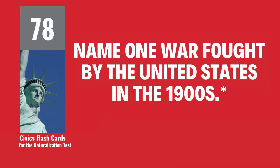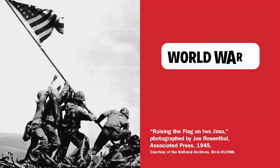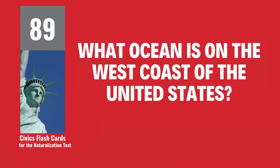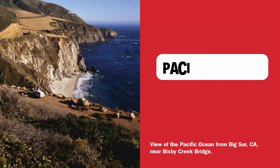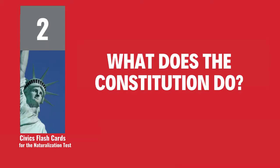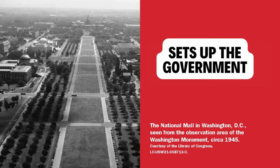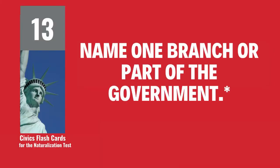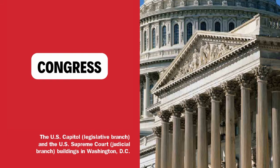Name one war fought by the United States in the 1900s. World War I. What ocean is on the west coast of the United States? Pacific Ocean. What does the Constitution do? Sets up the government. Name one branch or part of the government. Congress.